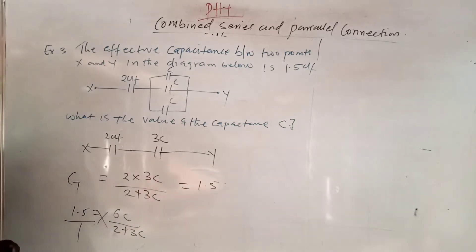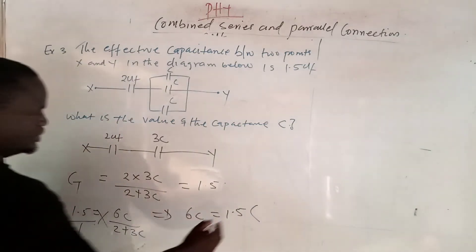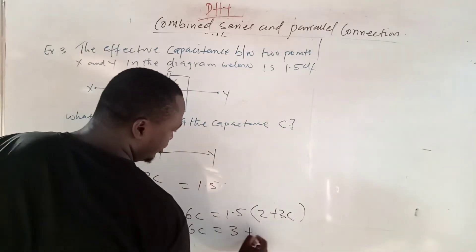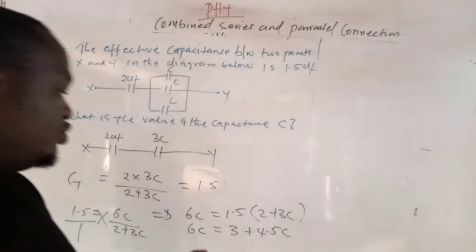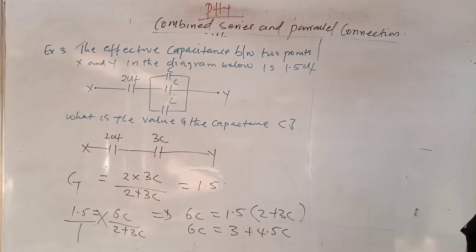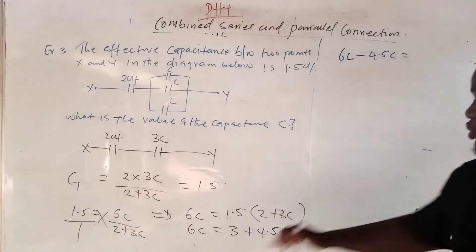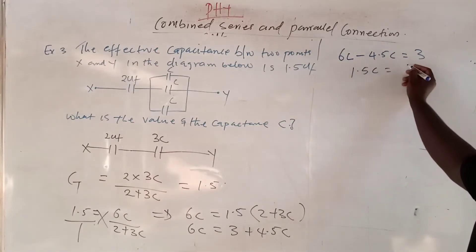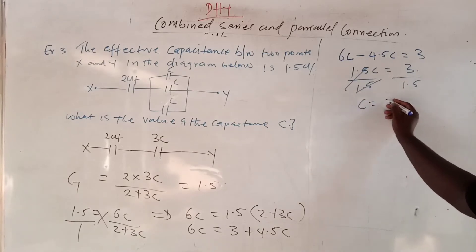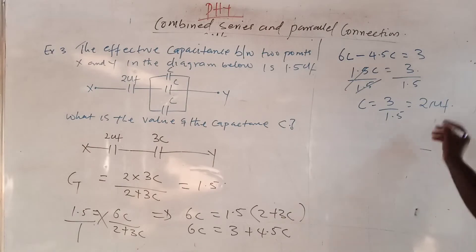Cross-multiplying: 6C = 1.5 × (2 + 3C), which gives 6C = 3 + 4.5C. Collecting like terms — C terms on one side — gives 6C − 4.5C = 3, so 1.5C = 3. Dividing both sides by 1.5, C = 3 ÷ 1.5 = 2 microfarad. So the value of C in the diagram is 2 microfarad.